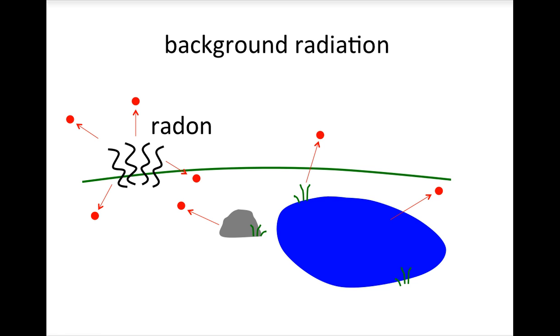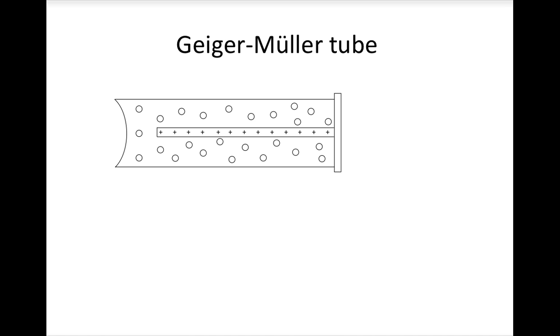But you might be wondering, how do we test for radiation? How do we detect it? Well, radiation can be measured using a Geiger-Mueller tube. You've got this tube with a gas inside and a positively charged rod which connects to a counting circuit.